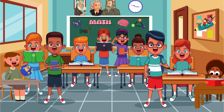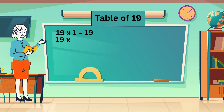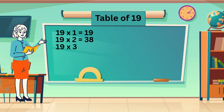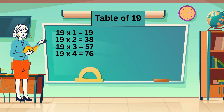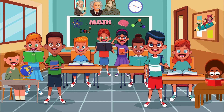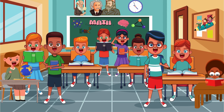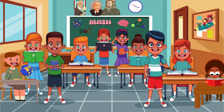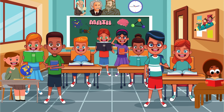Table of 19. 19 ones are 19. 19 twos are 38. 19 threes are 57. 19 fours are 76. 19 fives are 95. 19 sixes are 114.